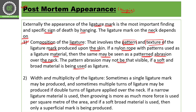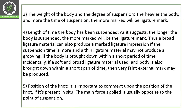The second factor is the width and multiplicity of ligature. Sometimes one, two, three, or four rounds of ligature are applied around the neck, so either a single ligature mark or multiple marks may be produced. If a narrow ligature material is used, grooving is more pronounced as more force is applied per square meter of the area. If a soft, broad material is used, only a superficial mark will be produced. With softer materials, the pattern injuries are less prominent, but they will still be present.